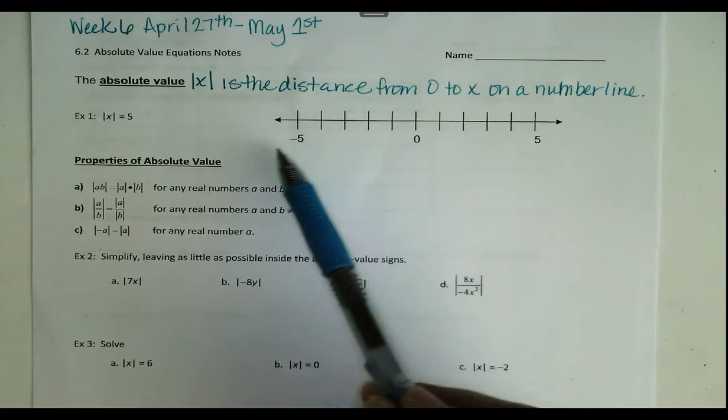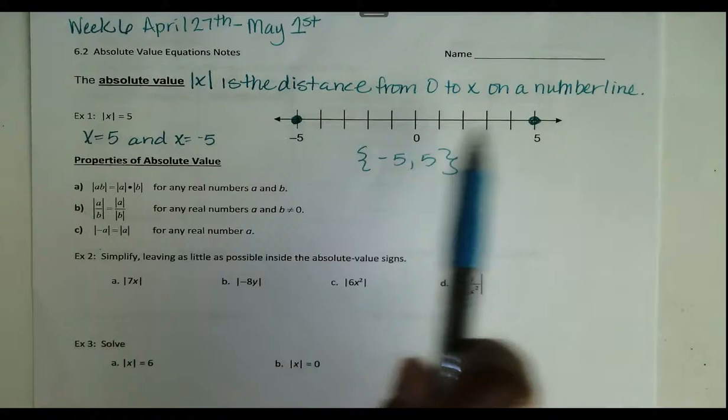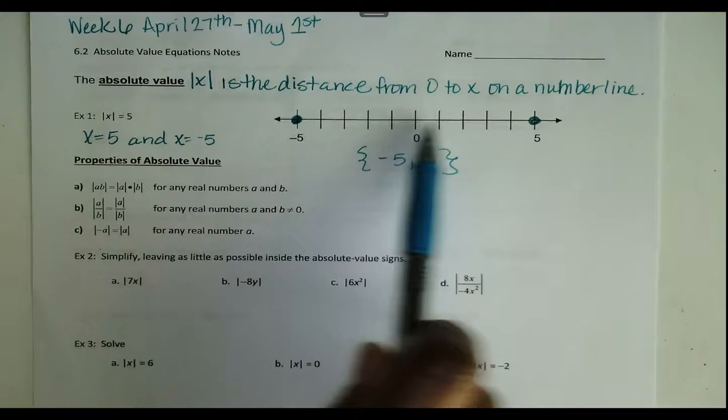So here's our solution written out — two different values: x equals 5, x equals negative 5. Here are the solutions on the number line. Notice 1, 2, 3, 4, 5 — that's 5 units from 0 to the left, and 5 units from 0 to the right. So both negative 5 and 5 are solutions to this equation.